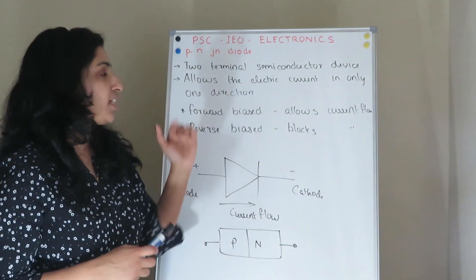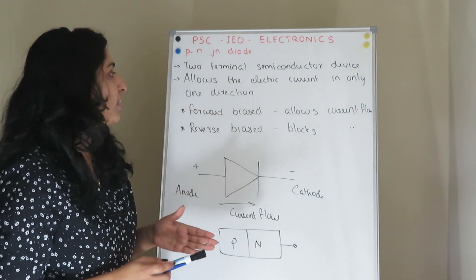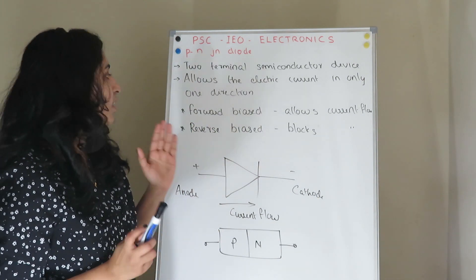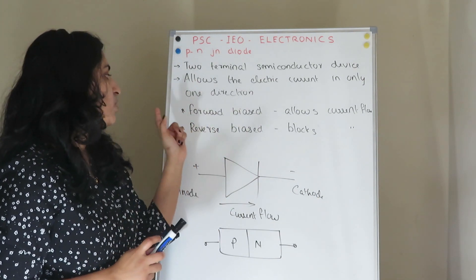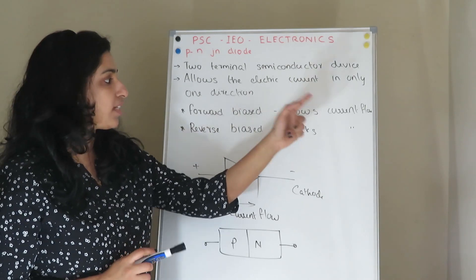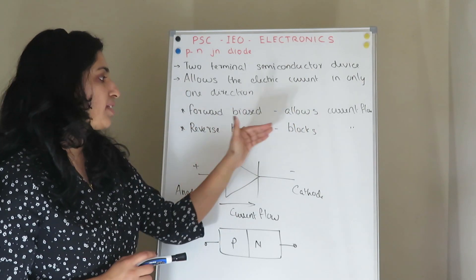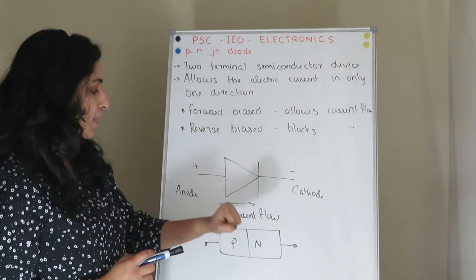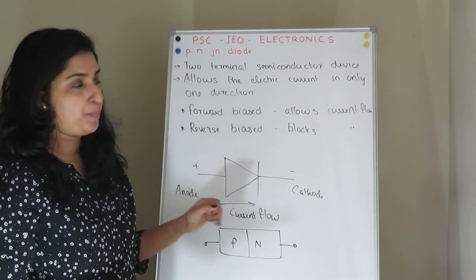PN Junction Diode is a two-terminal semiconductor device. It allows electric current in only one direction. That is, when it is forward biased, it allows the current flow. And when it is reverse biased, it blocks the current flow. This is the PN Junction Diode.